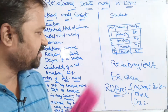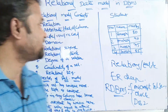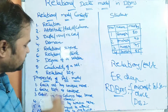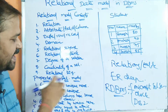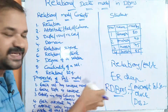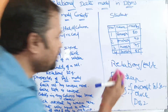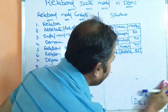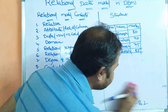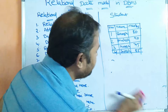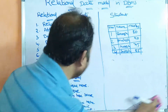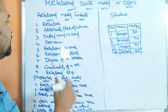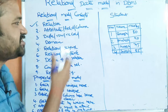In this video, we are going to discuss about relational model concepts as well as properties of the relational model. Now let us see the various terminologies used in the relational model, and then we will see the properties. The first terminology is relation.